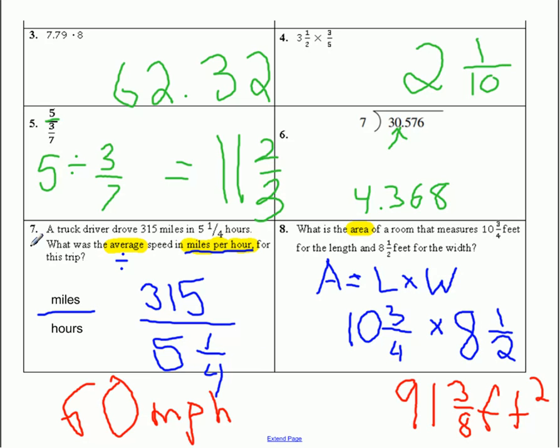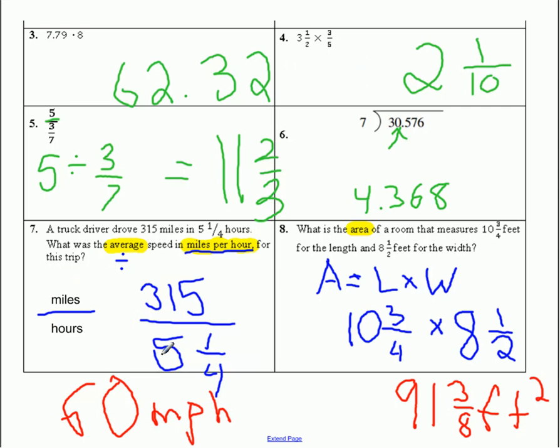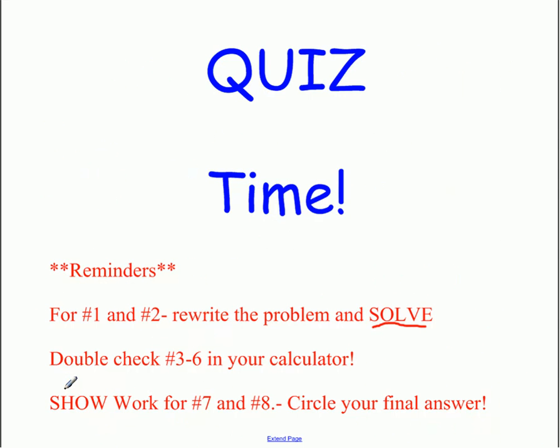Okay, so it's time for quiz time. Please leave this PowerPoint up on the board because I want to give you some reminders. For number one and number two, you're going to rewrite the problem and solve and give me the answer. For numbers three through six, just like we did now, make sure you double check them in your calculator. Don't make silly mistakes just because you typed something wrong. And for number seven and eight, just like our word problems here, I want you to show your work and circle your final answer. So I want to see what operation you're doing. Here I can see I did dividing, here I can see I did multiplying. So again, show your work and circle or box your final answer. Good luck to everyone, I hope you guys have a great day, and I will see you soon. Bye.